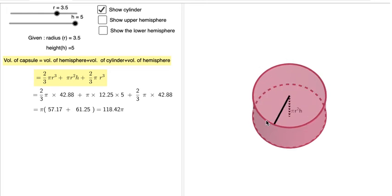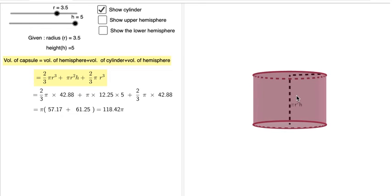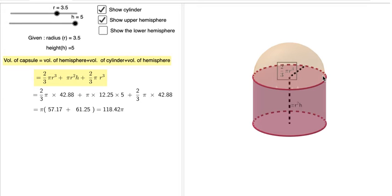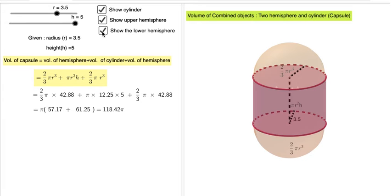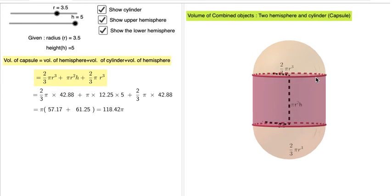The volume of the cylinder is pi r square h. Next is the upper hemisphere, which is 2 by 3 pi r cube. You can see that 2 by 3 pi r cube, and the lower hemisphere is also 2 by 3 pi r cube. So this is the volume of three parts. This is the volume of these objects, which is called a capsule.